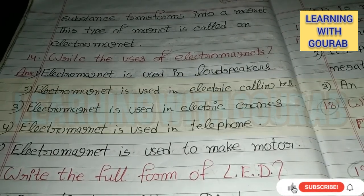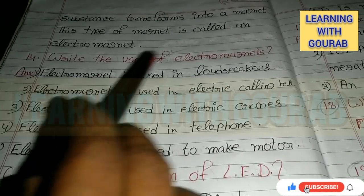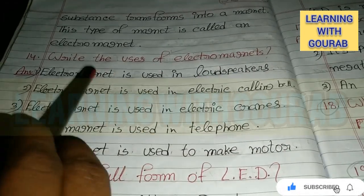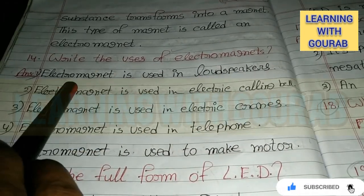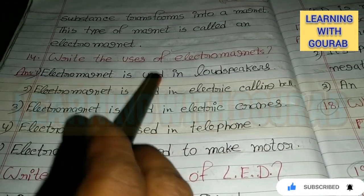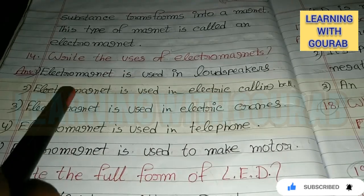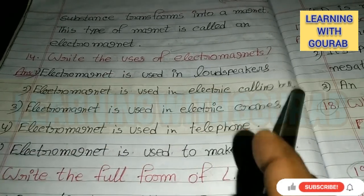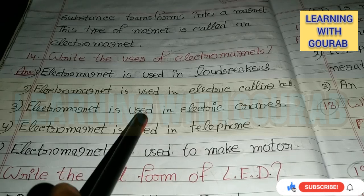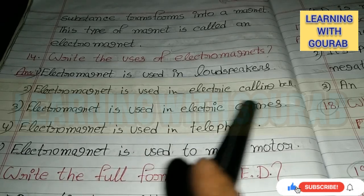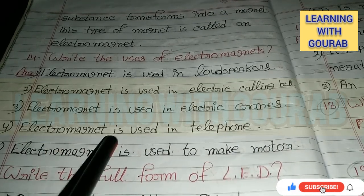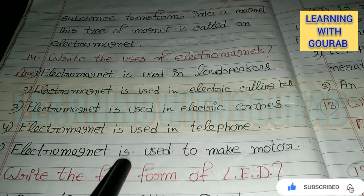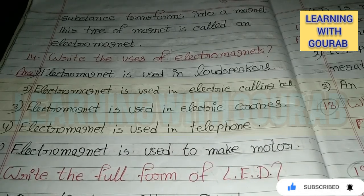Next question: Write the uses of electromagnets. Answer: Electromagnets are used in loudspeakers, electric calling bells, electric cranes, telephones, and to make motors.